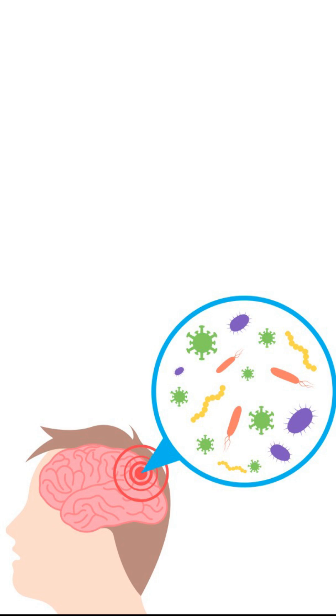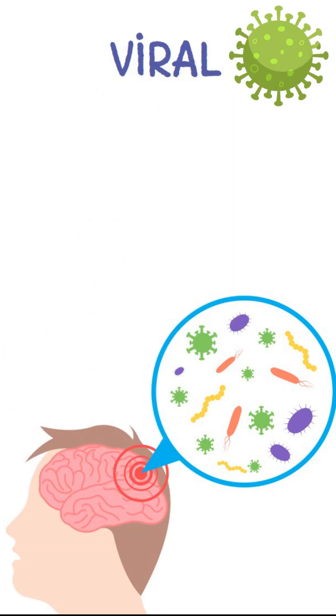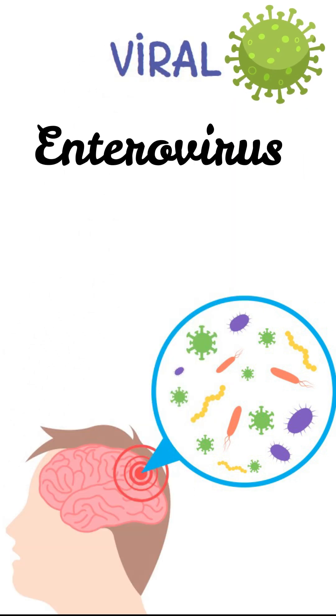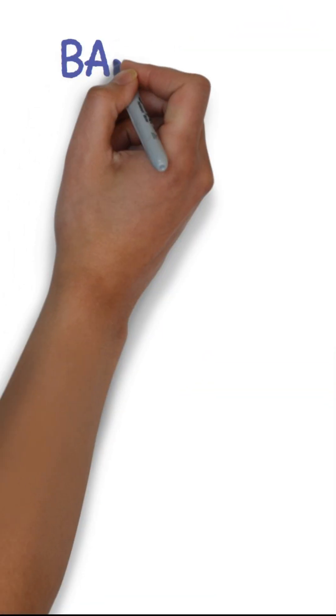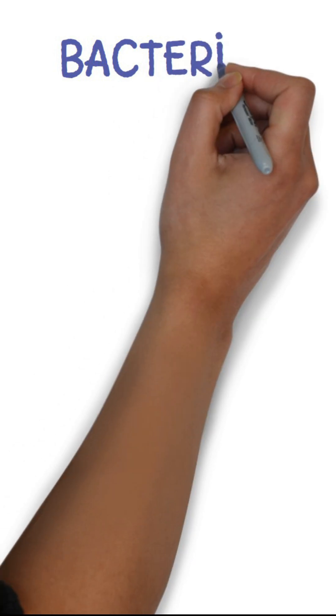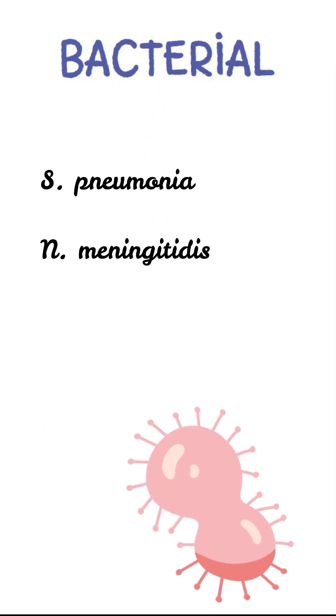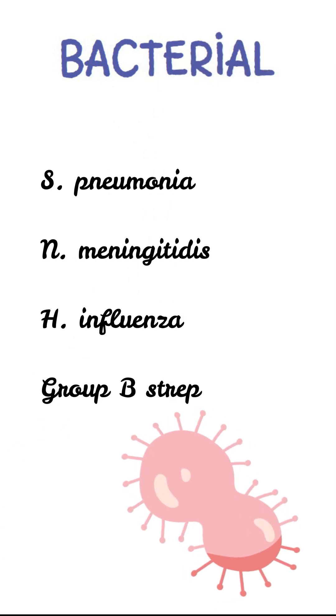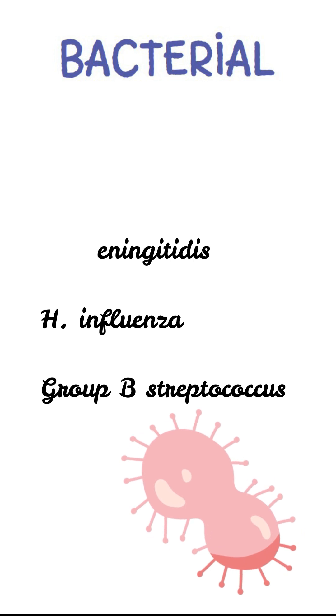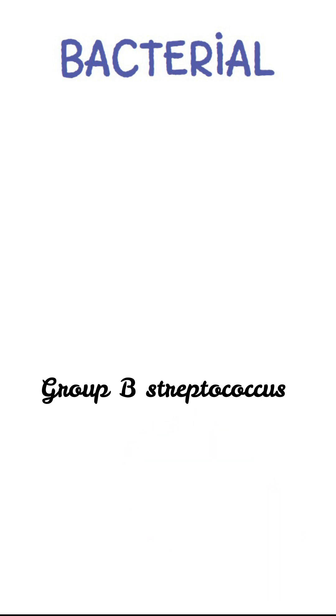Viral meningitis is the most common form, usually caused by enterovirus in children. Bacterial meningitis can be caused by many different types of bacteria, which includes Streptococcus pneumoniae, Neisseria meningitidis, Haemophilus influenzae, and Group B Streptococcus.